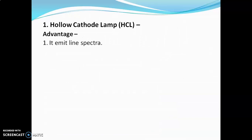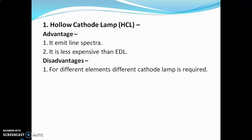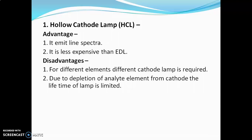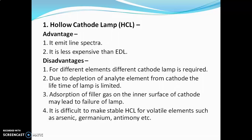Advantages of the hollow cathode lamp: it emits line spectra, and it is less expensive than the EDL. Disadvantages: for different elements, different hollow cathode lamps are required. Due to depletion of the analyte element from the cathode, the lifetime of the lamp is limited. Absorption of filler gas on the inner surface of the cathode may lead to failure of the lamp. It is also difficult to make a stable hollow cathode lamp for volatile elements such as arsenic, germanium, and antimony.